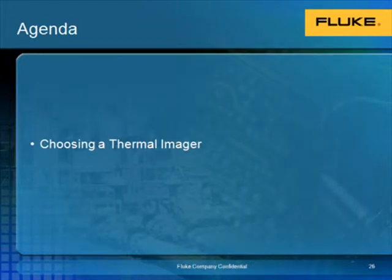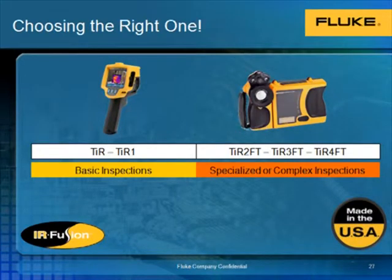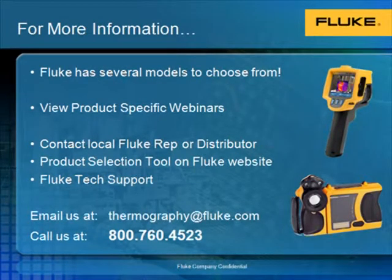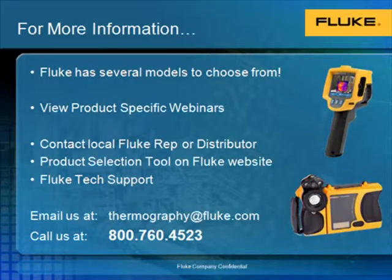Finally, we have some information on how to choose the right imager. In general, the TIR and TIR1 are meant for basic inspections and troubleshooting and are considered entry-level models. On the right you see the TIR2, 3, and 4, which tend to be used for specialized or more complex inspections as they carry a higher price tag. Fluke offers several models to choose from to fit a wide range of needs and applications. For more information you can view the product-specific webinar, or please contact your local Fluke rep or distributor. There is also a product selection tool on the Fluke website that makes choosing an imager very easy.